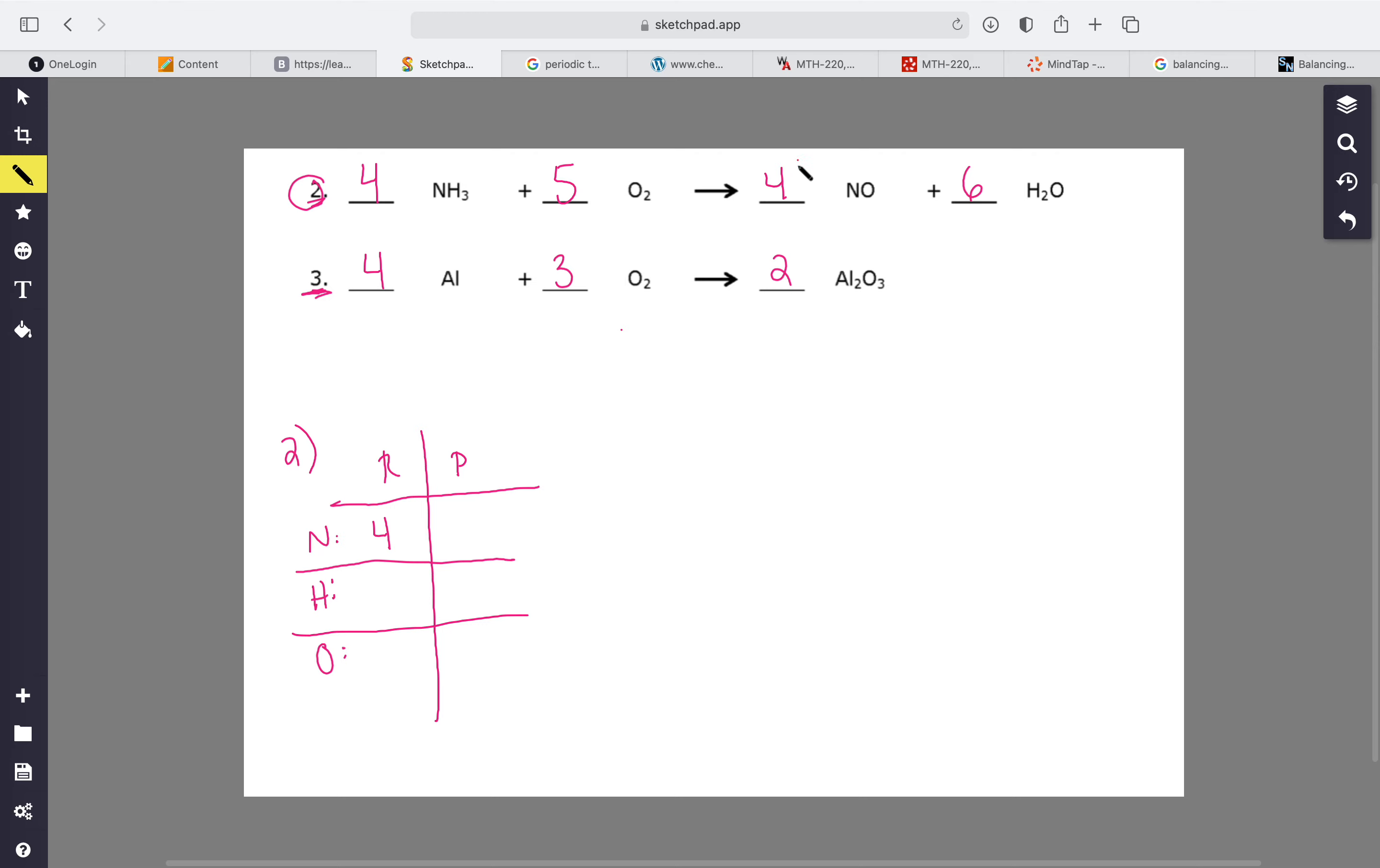So nitrogen - we have four in the reactants and in the products we also have four. So far so good. Hydrogen, we have twelve in the reactants, and in the products we also have twelve.